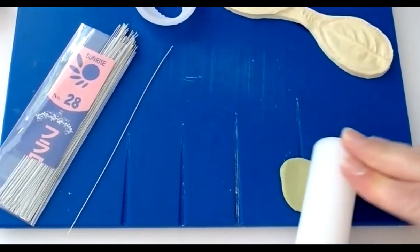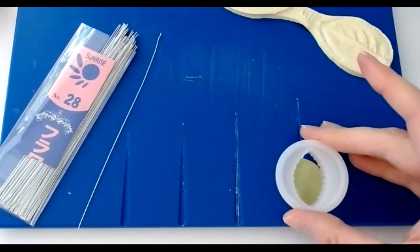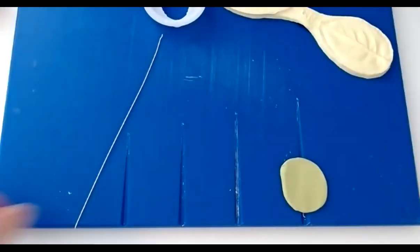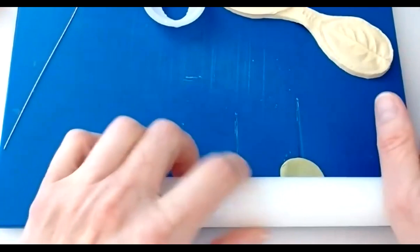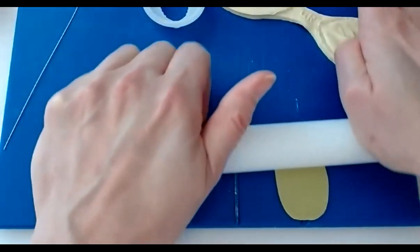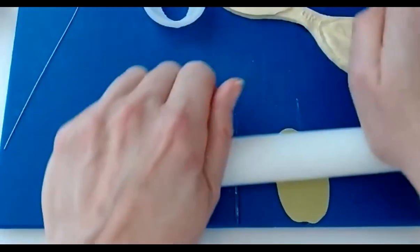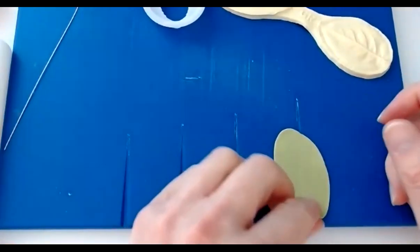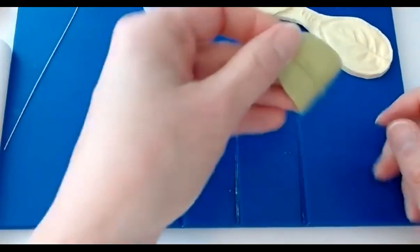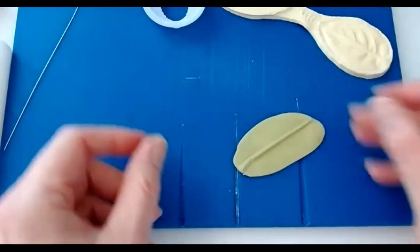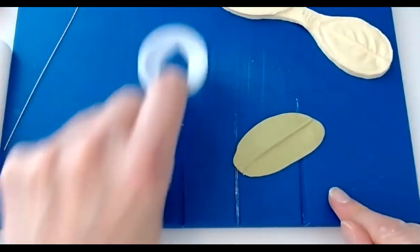So with this sausage of paste, first of all, what we're going to do is broaden the shape so that we know it's going to fit the width of the leaf. Move my wires out of the way and then lengthen it to get the size that we need for the cutter, but also to make it nice and thin. If you find it sticks to the rolling pin or the board, then please just add cornflour and that should help.